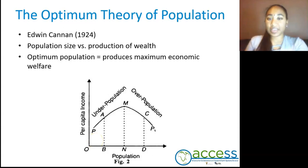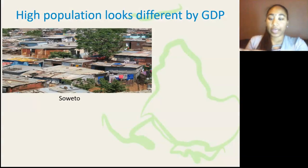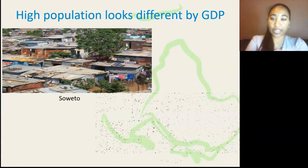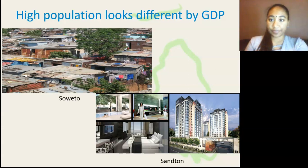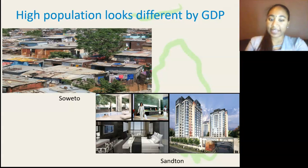So when a population is high, how is this affected by its GDP? Well, we have two cities in the same province: Soweto and Sandton. As you can see in Soweto, there are shanty houses, it is claustrophobic and there is poor sanitation, whereas Sandton has excellent infrastructure, good sanitation, and easy access to goods and services.